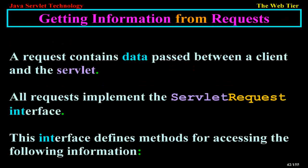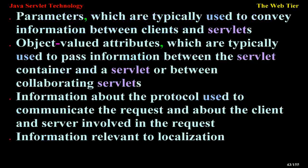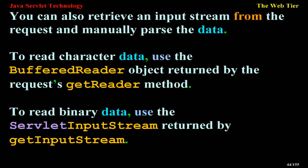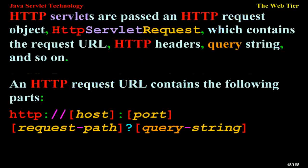Getting information from requests. A request contains data passed between a client and the servlet. All requests implement the servlet request interface. This interface defines methods for accessing: parameters, which are typically used to convey information between clients and servlets; object-value attributes, which are typically used to pass information between the servlet container and a servlet or between collaborating servlets; information about the protocol used to communicate the request and about the client and server involved; and information relevant to localization. You can also retrieve an input stream from the request and manually parse the data. To read character data, use the BufferedReader object returned by the request's getReader method. To read binary data, use the ServletInputStream returned by getInputStream.